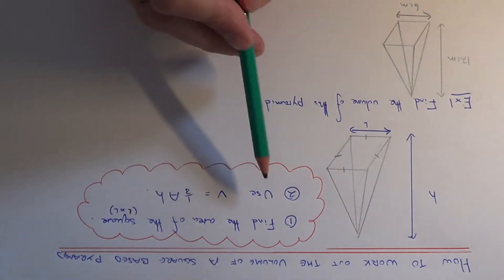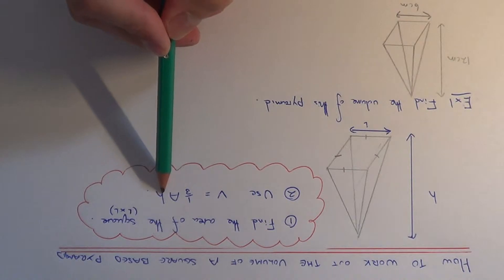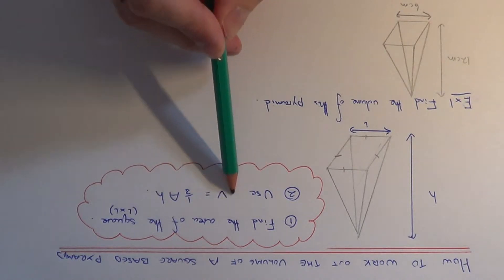Once you've done this, you use the formula V equals one third times the base area times the height, where V is the volume.